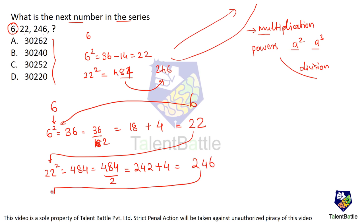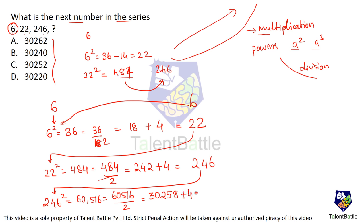Next: 246 squared comes out to be 60,516. Half of 60,516 is 30,258. Add 4 to get 30,262. So the answer is 30,262, which is option A.